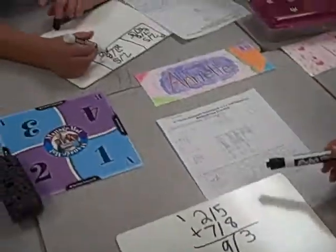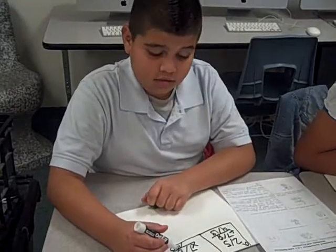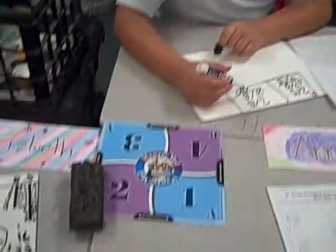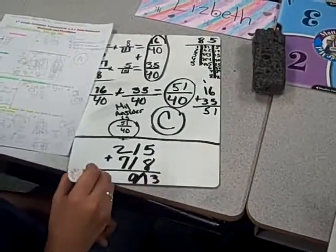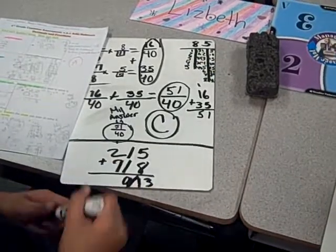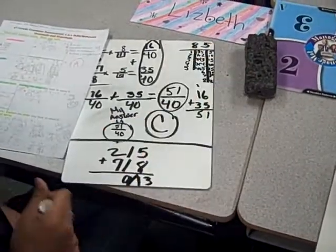Would you agree, Jonathan, or do you disagree? Okay. And they got 9/13, and the first thing they forgot was to find the least common denominator. Mm-hmm.